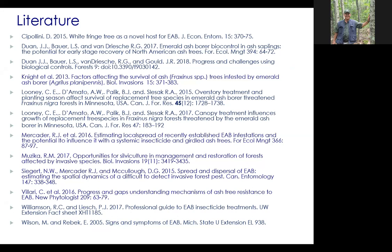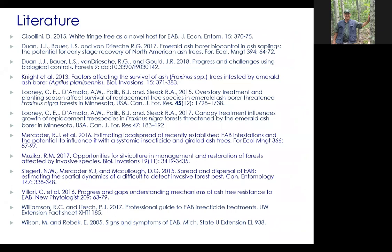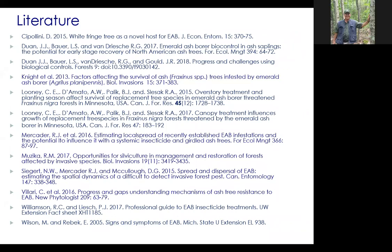Jeff Crick asks: do ash stump sprout, and if they get past the deer, is there any evidence these sprouts will be more likely to survive? In my experience, I don't see stump sprouting as being a major factor for ash — I don't see it that often like you would with red maple or some other hardwoods. I imagine it does stump sprout, but primarily I see regeneration coming from seedlings. Ash does stump sprout, and deer then eat all of them. The sprouts are the same genetics as the original tree, so there's no reason to think they would be more likely to survive EAB.